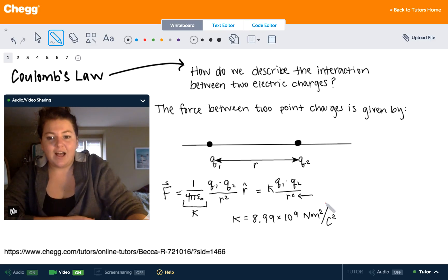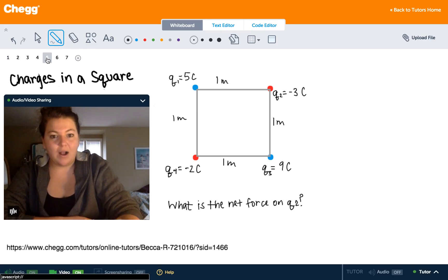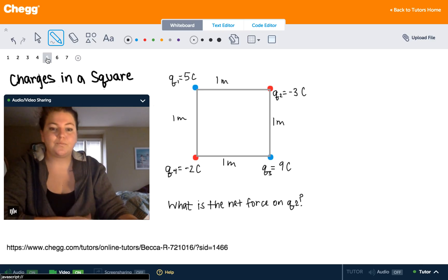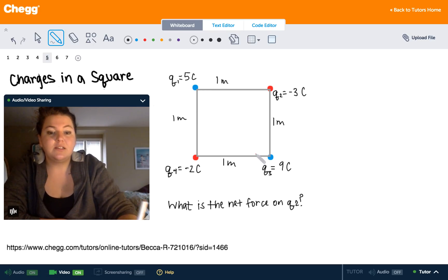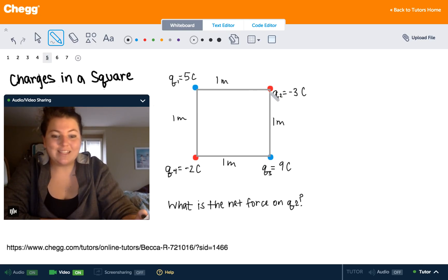So how do we apply this law to a problem that you might see like this one? Well, suppose you have an array of four charges in a square. We have two positive charges here and then we have two negative charges here, the red dots. And the question asks, what is the net force on Q2? This charge right here of minus three coulombs.